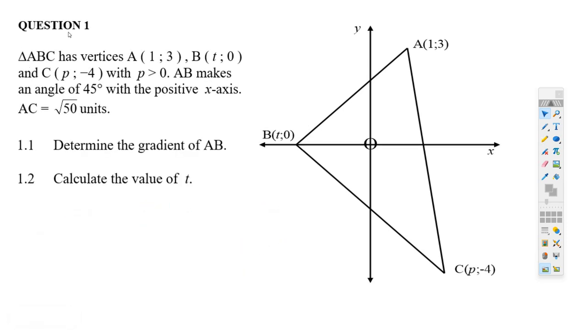Okay, here we go. I'm going backwards here. Question 1, part 1.1: Determine the gradient of AB. They tell us that the angle AB makes with the positive x-axis is 45 degrees. So that's enough. They give us these other points, but we know that the angle is 45 degrees.